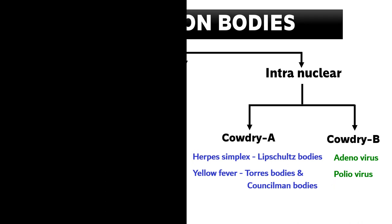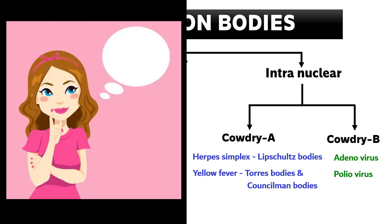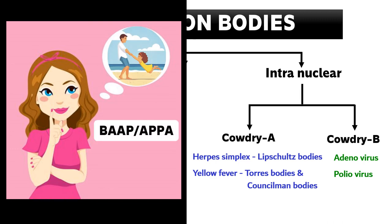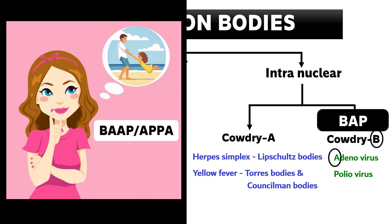For Cowdry type B inclusion bodies, imagine that looking at the happy nuclear family, Rani remembered her father — in Hindi the word bap means father. BAP: B stands for Cowdry type B, A stands for adenovirus, and P stands for poliovirus. With this you can easily remember the examples under Cowdry type B inclusion bodies.